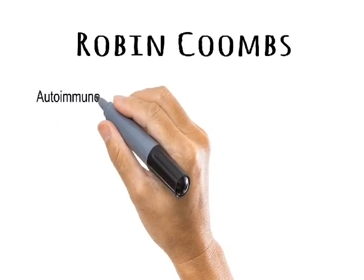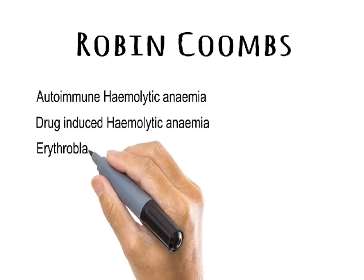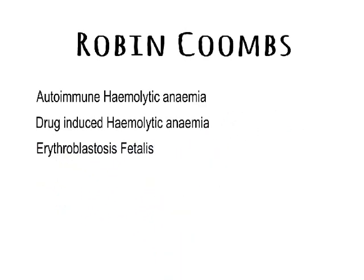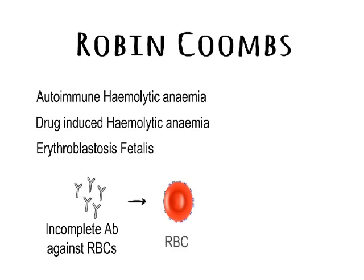Coombs developed this technique to detect incomplete antibodies that cannot be identified by standard agglutination or precipitation tests. There are many conditions in which the body can produce incomplete antibodies against RBCs, including autoimmune hemolytic anemia, drug-induced hemolytic anemia, and erythroblastosis fetalis — that is, hemolytic disease of the newborn. In all these conditions, antibodies against RBCs can bind to and destroy RBCs, leading to a reduction in RBC numbers, a condition known as anemia.